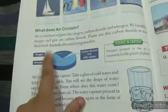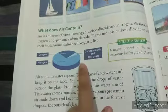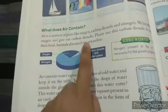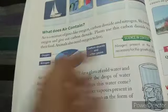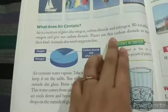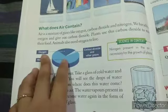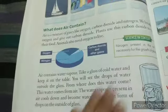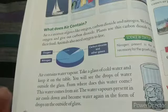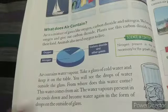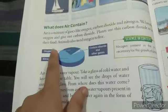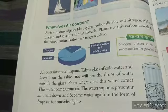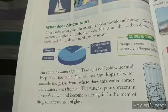We breathe in oxygen and give out carbon dioxide. Hum oxygen ko andar inhale karte hain aur carbon dioxide bahar exhale karte hain. Plants use this carbon dioxide to make their food. Animals also need oxygen to live. Aur plants exhaled carbon dioxide ko apna khana banane mein use karte hain. Animals ko bhi oxygen ki zaroorat hoti hai survive karne ke liye.